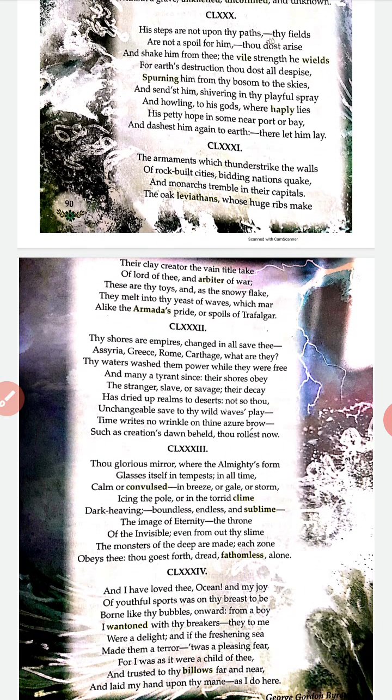Thy shores are empires, change in all save thee — Assyria, Greece, Rome, Carthage, what are they? Wherever the shores of the ocean reside, they make the empires beside them very rich. Empires like Assyria, Greece, Rome, and Carthage would be nothing without the help of the ocean. The poet further says that the waters of the ocean give power to these emperors and also made them free from tyrant rulers. Tyrants means cruel rulers.